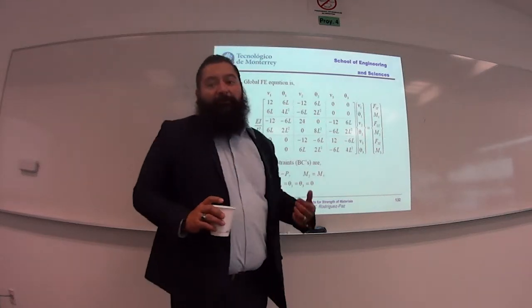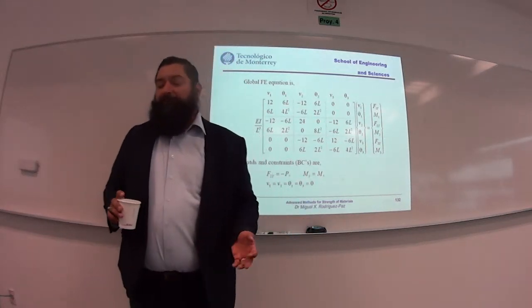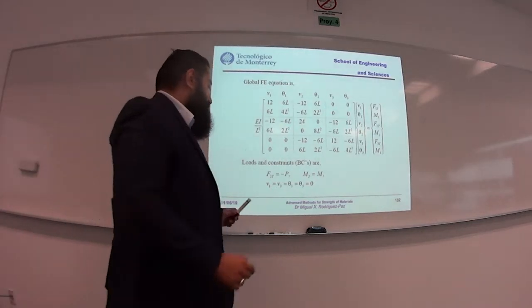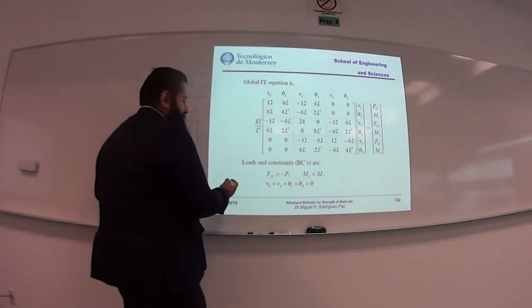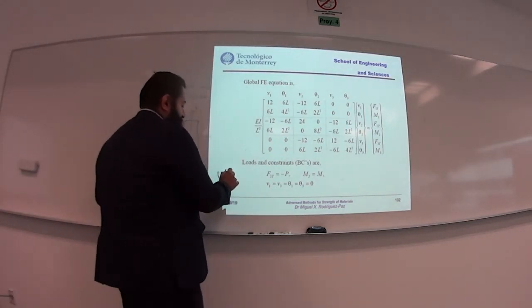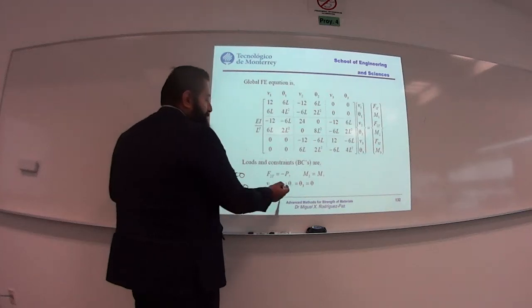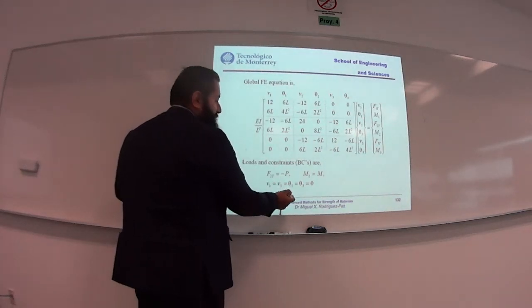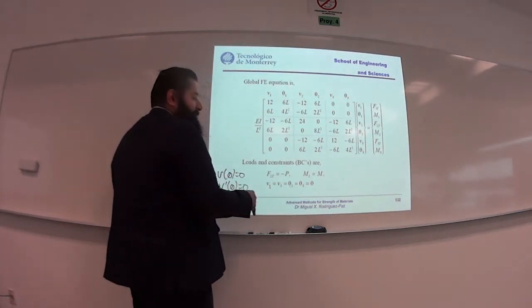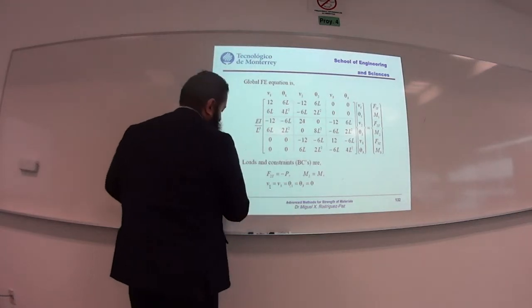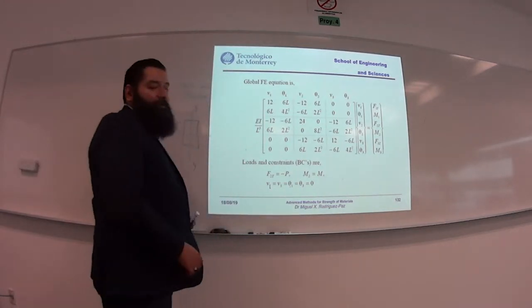These are the constraints: the deflection at node 1 and node 3 are equal to zero, and so are their rotations — theta_1 and theta_3 equal zero. When we were solving the Bernoulli equation using differential equations, we were saying v(x=0) = 0 and also the slope equals zero. It's similar here, but now we have rotation instead of slope — and v is analogous.